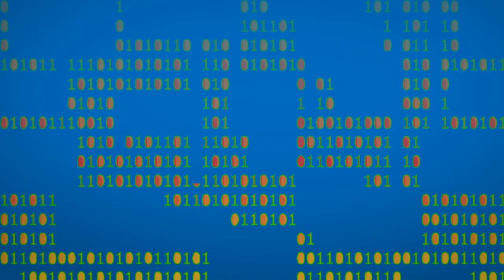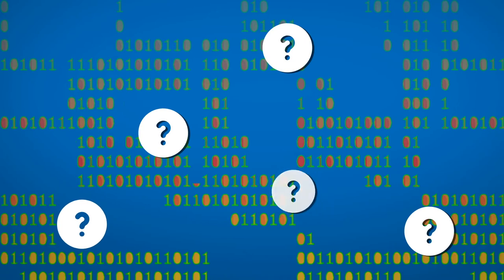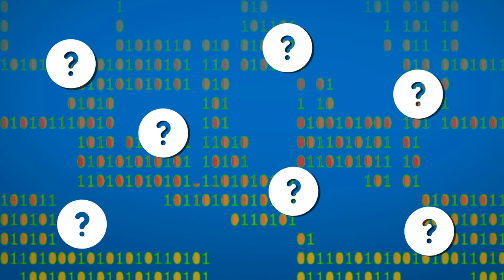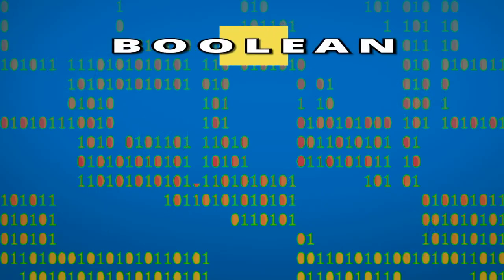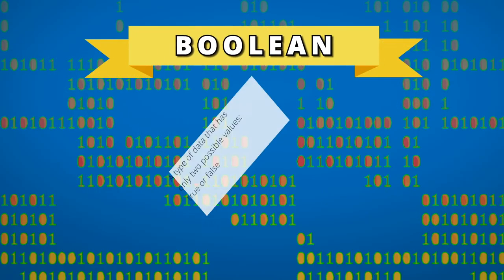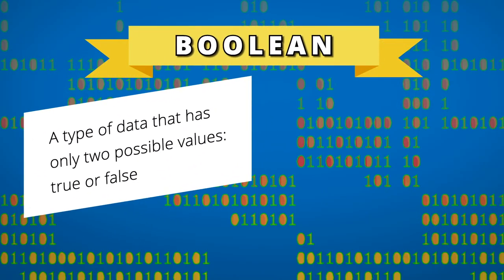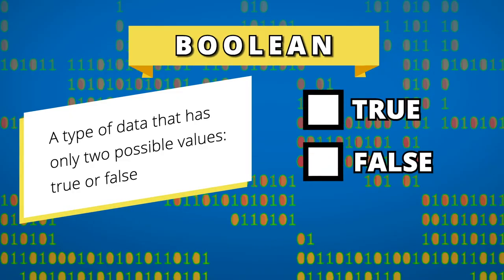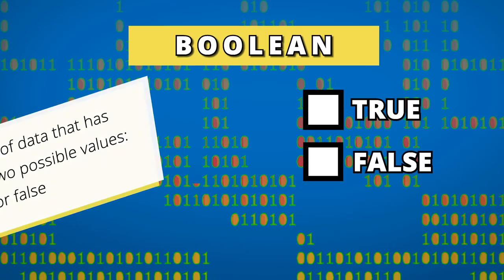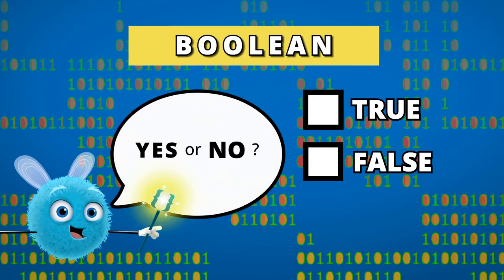Now you might not have known it, but while you were answering those true or false questions, you were also practicing a new coding concept called booleans. A boolean is a type of data that only has two possible values: true or false. You can think of a boolean like the answer to a yes or no question. If the answer is yes, the boolean value is true. If the answer is no, the boolean value is false.